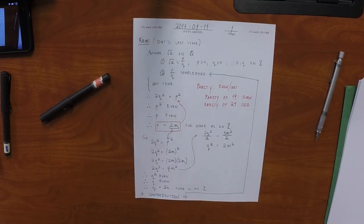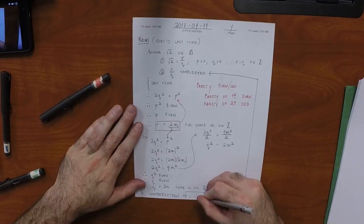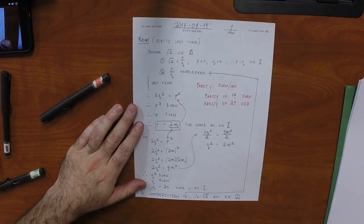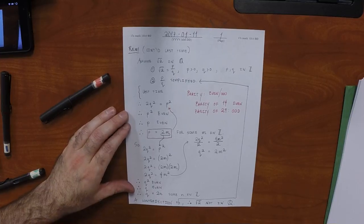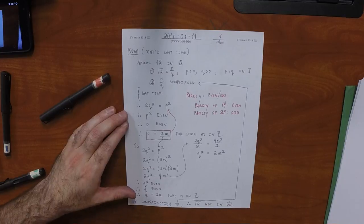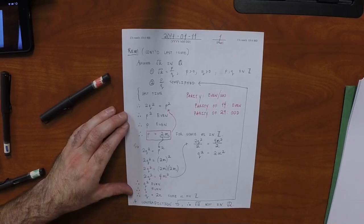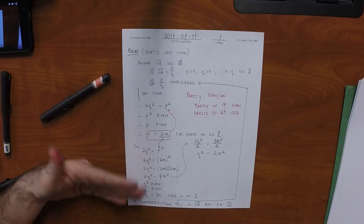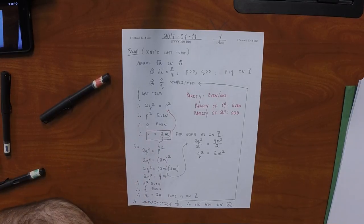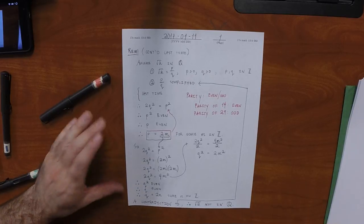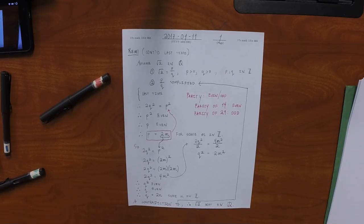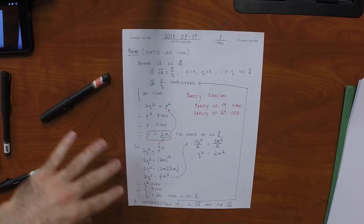This is a standard style of mathematical argument called proof by contradiction: to prove that √2 is not rational, we assume that it is, then arrive at a ridiculous consequence — the fraction being simultaneously simplified and not simplified. That contradiction means the assumption was invalid. If you enjoy this style of reasoning, consider taking more math courses; if not, avoid upper-division math.